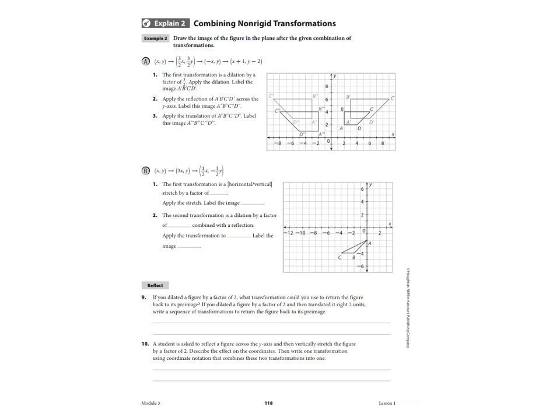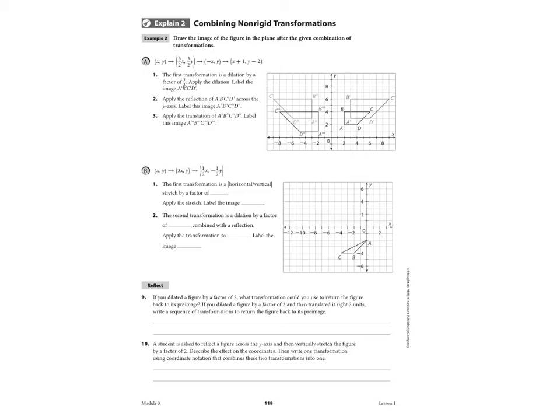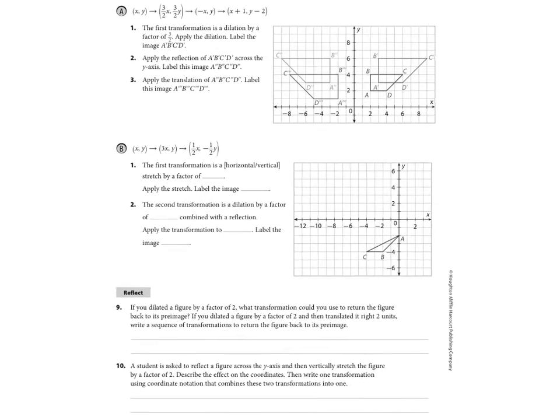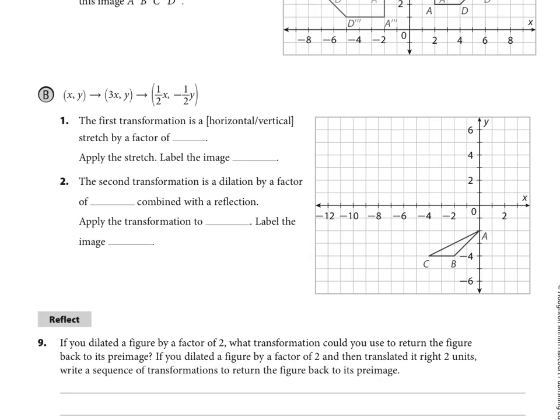And we're going to combine non-rigid functions. So if we look at B, it says XY goes to 3XY, goes to 1 half X, and negative 1 half Y. So the first transformation, what happens right here? Well, it's X, right? So that means it's a horizontal stretch factor of 3. And then it says it wants us to apply the image. So pause and write down the coordinates of ABC first.